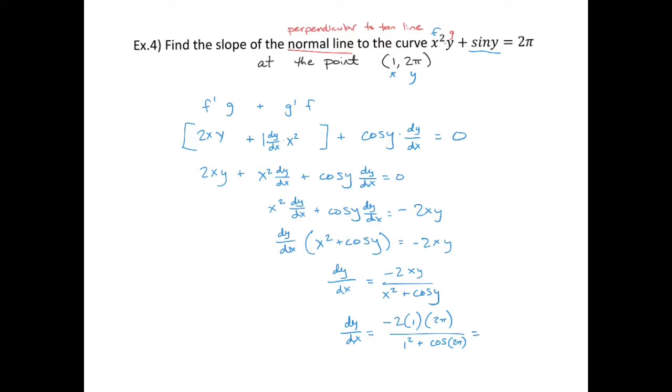In the numerator I've got -2 times 1 times 2π, so -4π. In the denominator it's 1 + cos(2π), and cos(2π) equals 1, so that's -4π/2, which equals -2π.